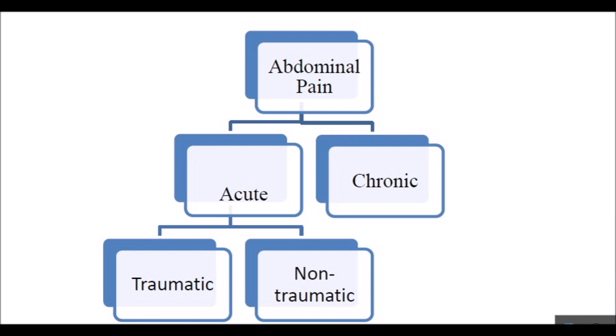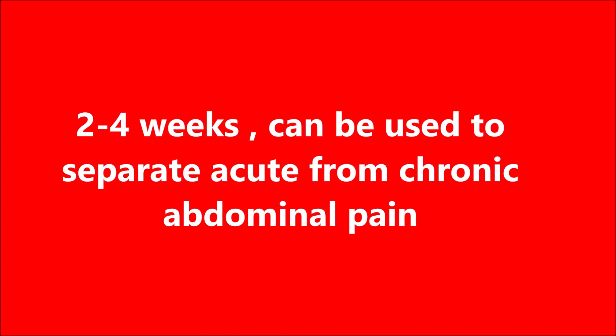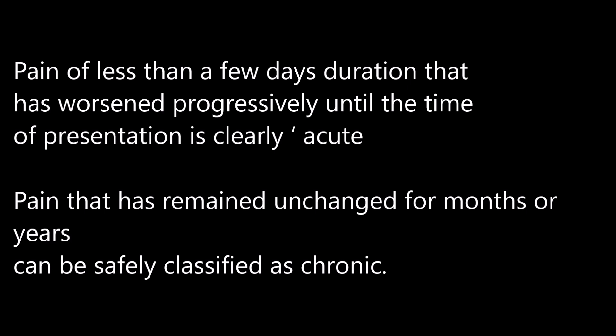Abdominal pain may be acute or chronic. In acute, it may be traumatic or non-traumatic. An arbitrary interval such as two to four weeks can be used to separate acute from chronic abdominal pain, but there is no strict time period. A clinical judgment must be made considering whether the process is accelerating, has reached a plateau, or is long-standing. Pain of less than a few days duration that progressively worsens until presentation is clearly acute. Pain that has remained unchanged for months or years can be safely classified as chronic pain.